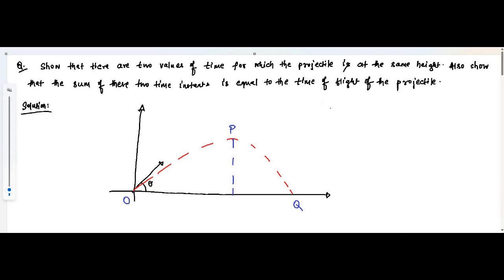The peak point we call P, and the point where it finally touches the ground is Q, so we have O, P, Q. The first part of the journey is the upward journey from O to P — the peak, the maximum height — and the downward journey from P to Q. It is symmetric on either side of the dividing line PM.